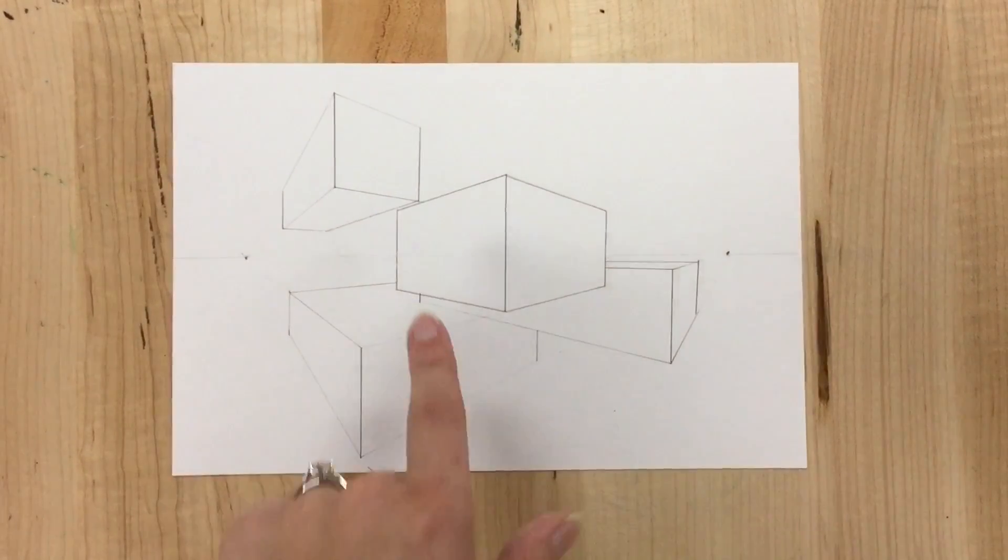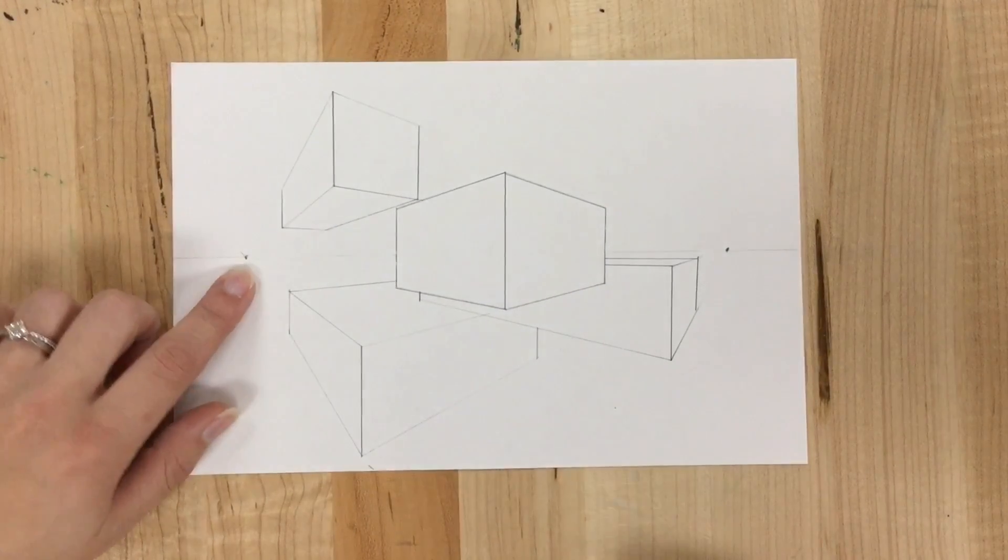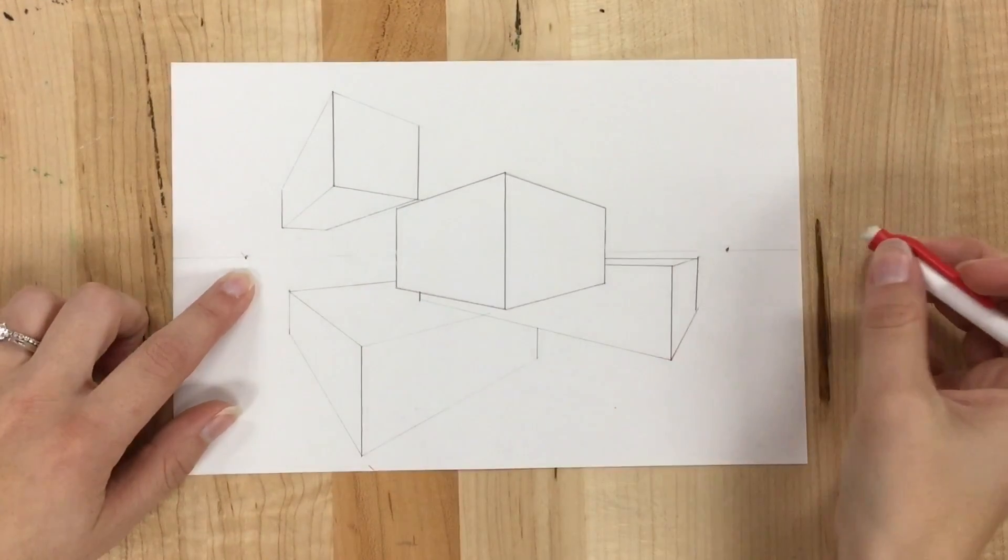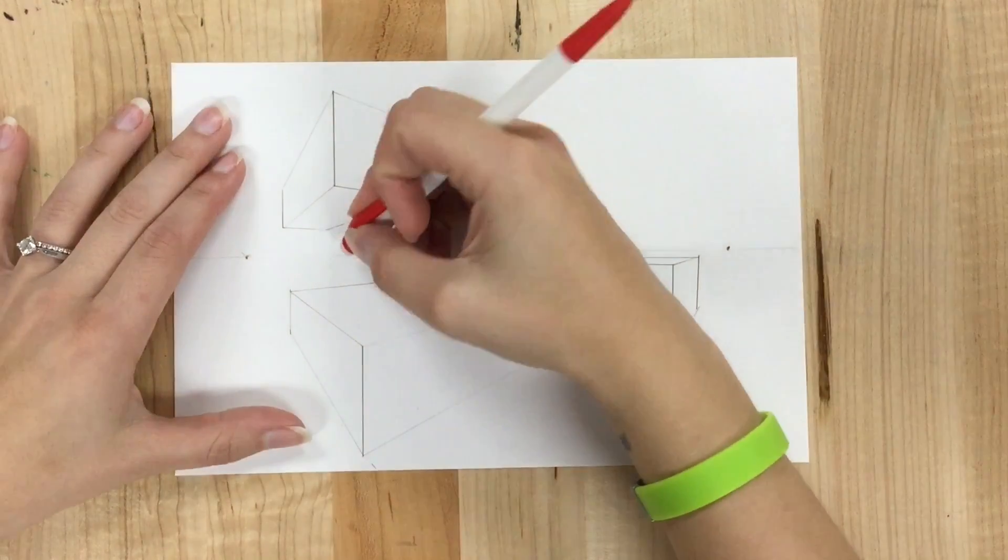So if I've decided that my project is done, I want to erase my vanishing points and my horizon line since my floating shapes aren't really in any sort of land.